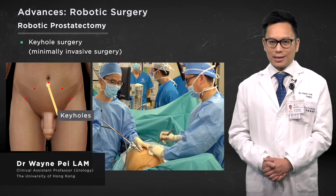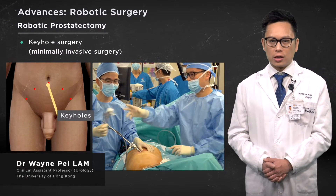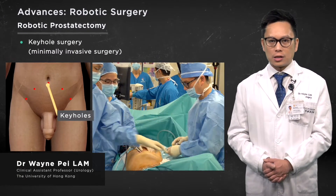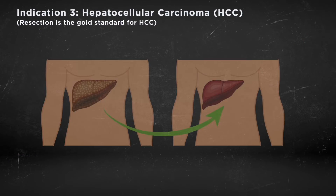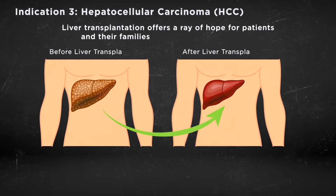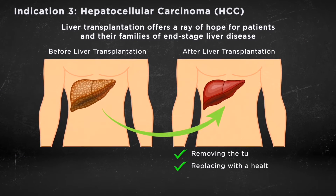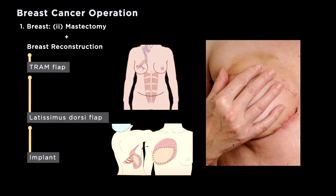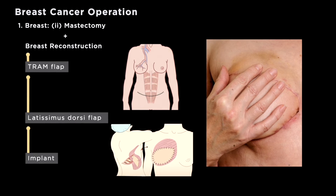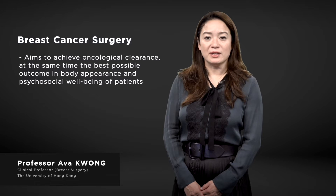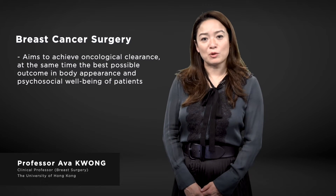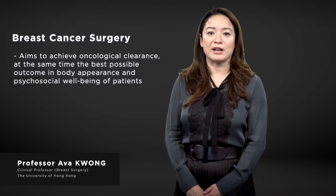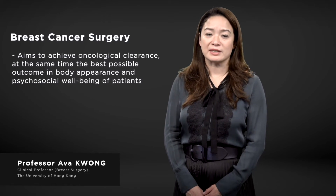The modern technique is to use robotic surgery to remove the entire prostate surgically. Liver transplantation offers a ray of hope for these patients because it treats two conditions simultaneously. Breast cancer surgery is aiming to achieve the best possible results for women while restoring as much of their normal function and appearance as possible.